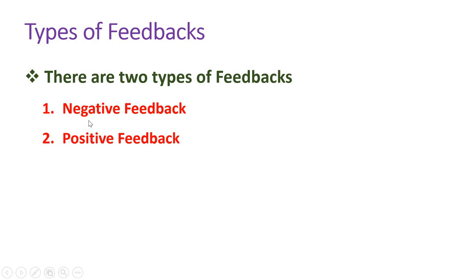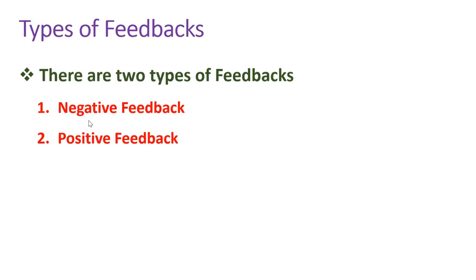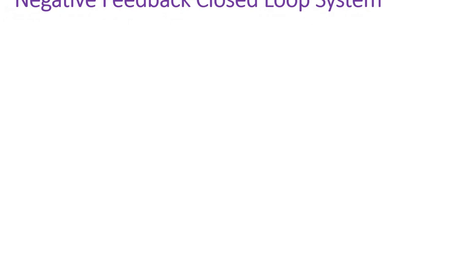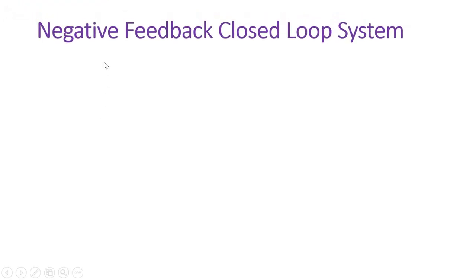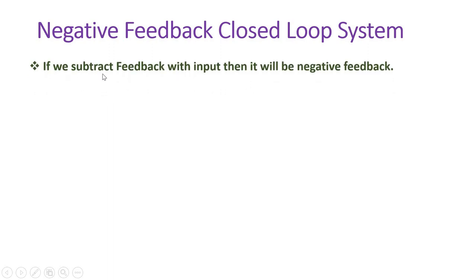Let us begin with the first agenda: what is negative feedback. When we talk about negative feedback, in a closed loop system the feedback should be negative with respect to the input signal. This means when we subtract the feedback signal with respect to the input, it is considered negative feedback. A second definition: if the feedback signal is out of phase with respect to the input signal, then the feedback is called negative feedback.